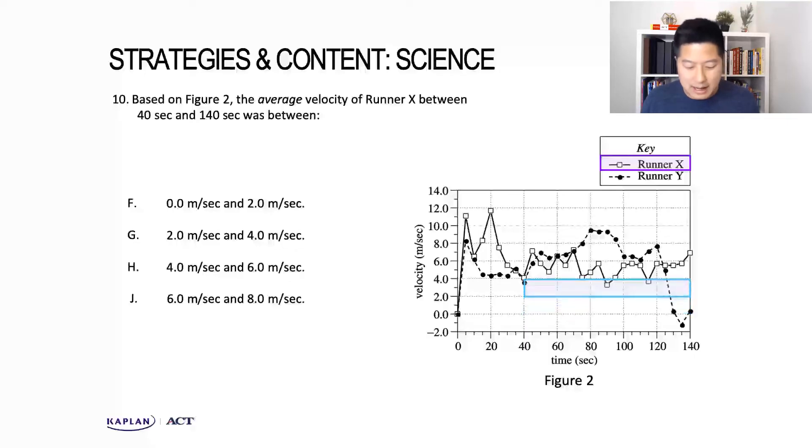In this interval—two meters per second to four meters per second—there's a couple of data points, but it's not the average. If we compare the last two, there's definitely a lot of data points in the velocity range of four meters per second to six meters per second, more so than the last answer choice, answer choice J.